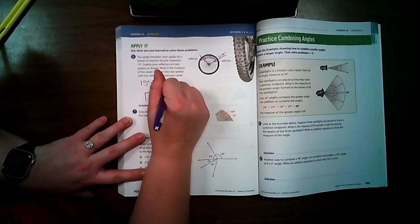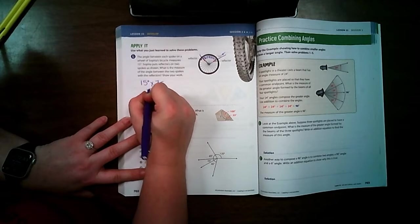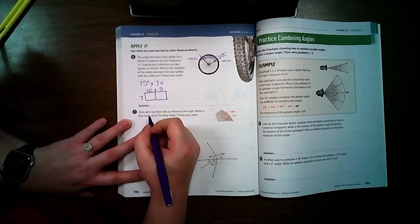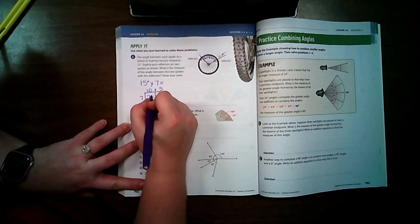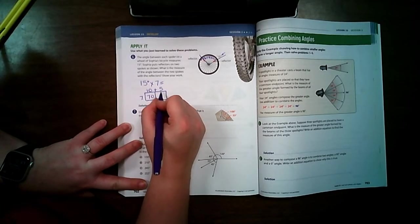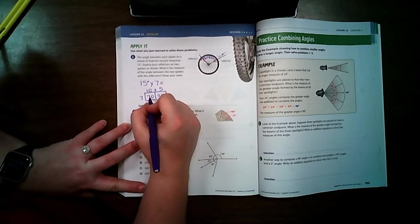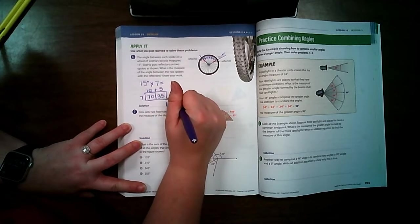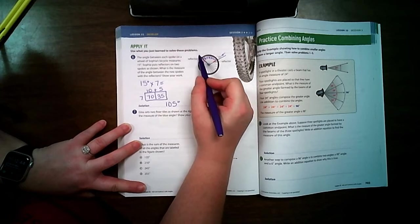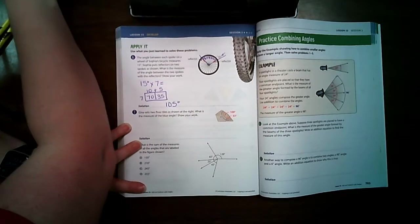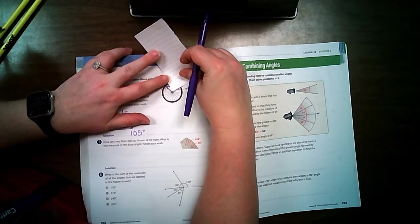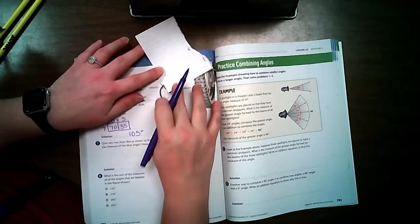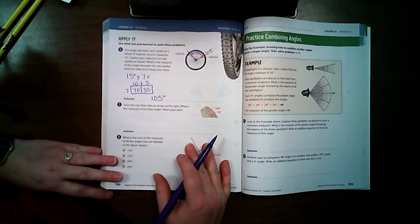So if I use my area model, I have 10 plus 5. And then I'm going to put my 7 over here. 7 times 10 is 70. 7 times 5 is 35. 70 plus 35 is 105 degrees. Does that look like it's 105 degrees? Yeah, it looks just a little bit bigger than a right angle. So if I measure here, yep, it's just a little bit bigger than a right angle. It's an obtuse angle. So that sounds like a reasonable answer.